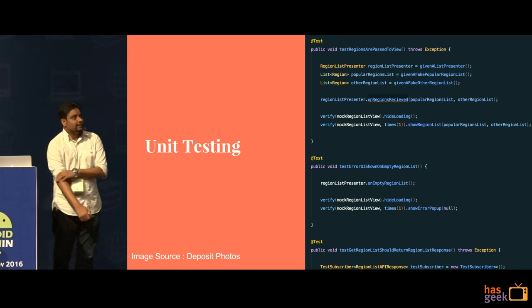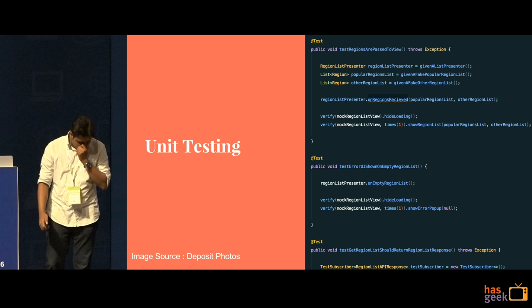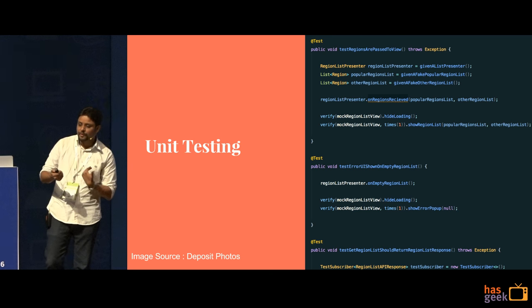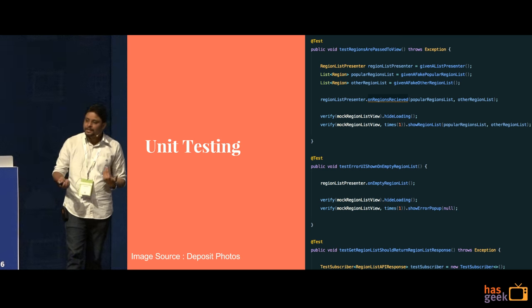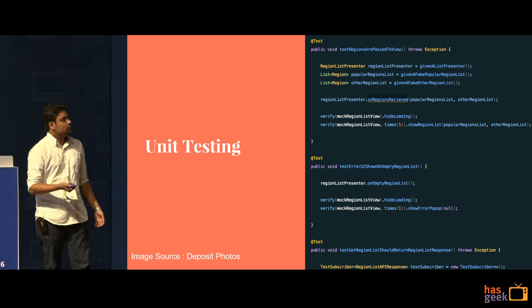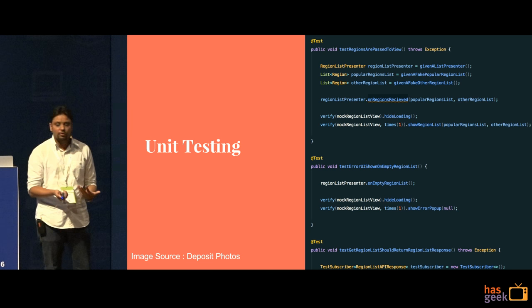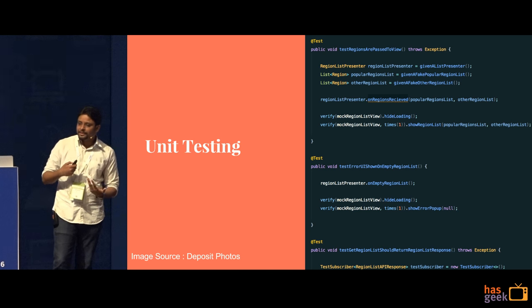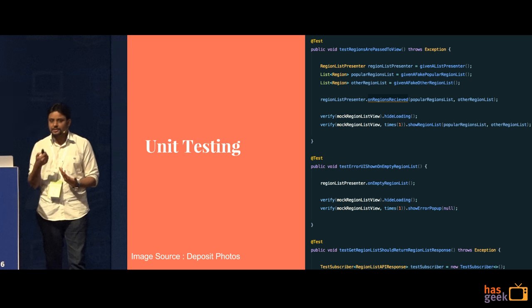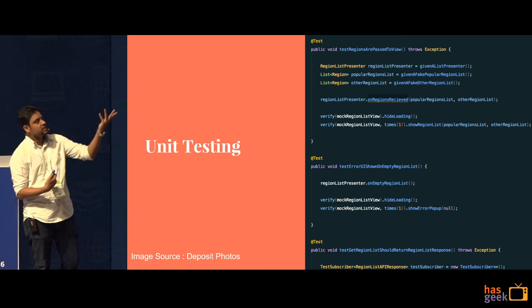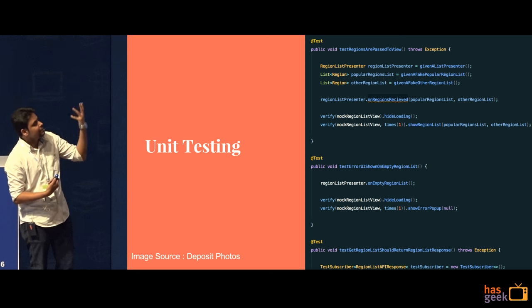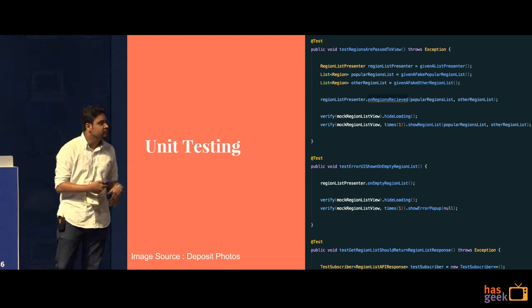The other big thing that happened was unit testing. As I said, that cycle of updates — one hour of code, four days of testing — did not work out. We started off with the approach where we wanted everything to be unit tested within the code itself and not rely on manual QA, thus reducing the cycle times. This is just a sample test — a presenter test — which basically tests the presenter.